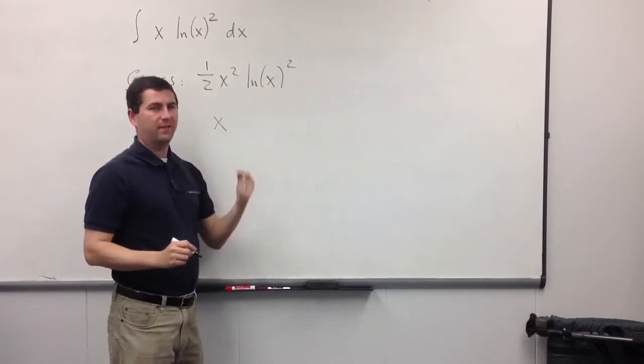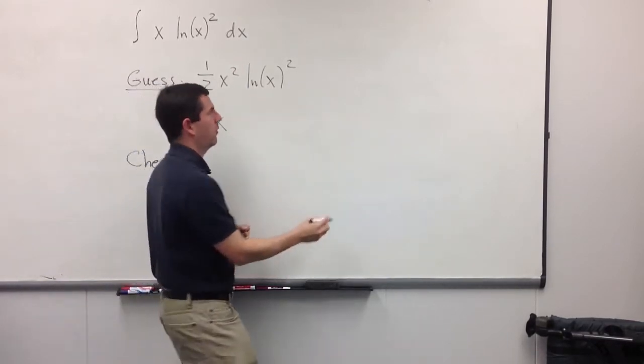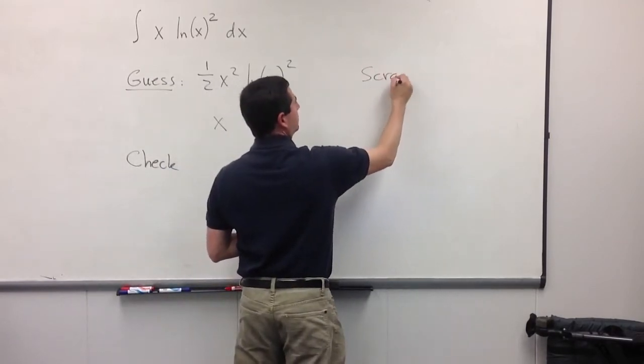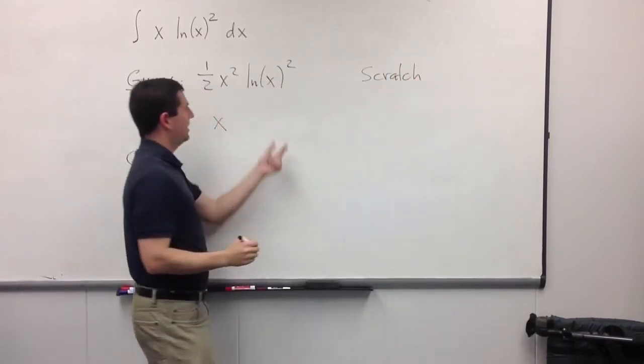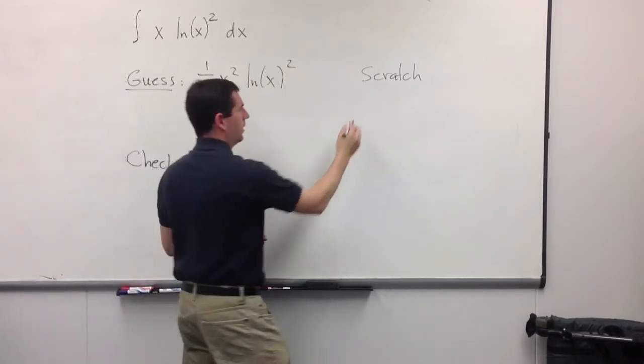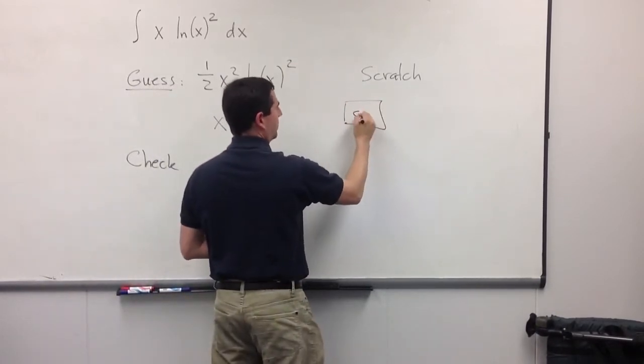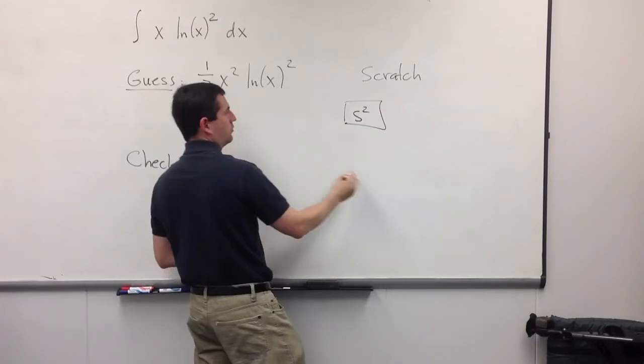And now, to do the derivative of ln of x squared, well, let's do a little scratch work. It's something squared. We have to use the chain rule here. So, it's something squared. And the something is the natural log of x.